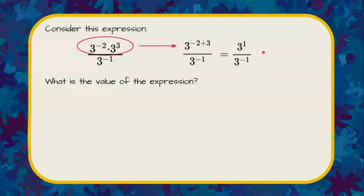So this can be rewritten to be 3 to the 1 subtract negative 1. When we subtract a negative value, we're going to add the opposite, which gives us 3 to the 1 plus 1, and 1 plus 1 is 2.